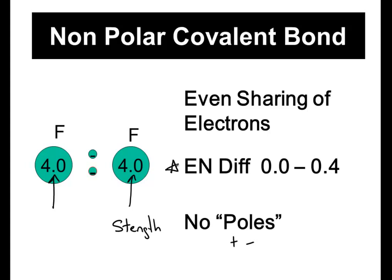Now, I want you to key in on this. When I have an even sharing of electrons, as I have in a non-polar covalent bond, the electronegativity difference is specifically going to be between 0.0 and 0.4. Now, how did I get that? I took 4.0 from the one atom, I subtract the 4.0 from the other atom, and I end up with a zero difference in electronegativity.